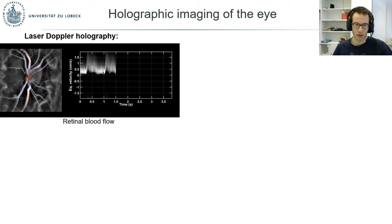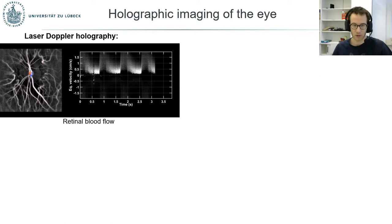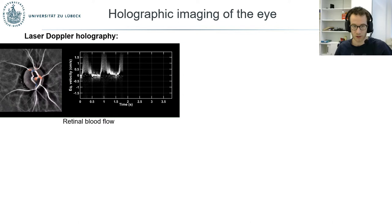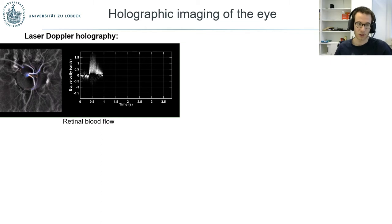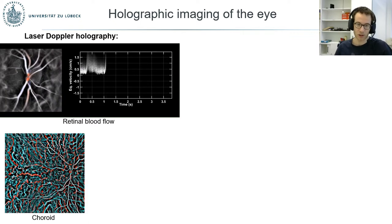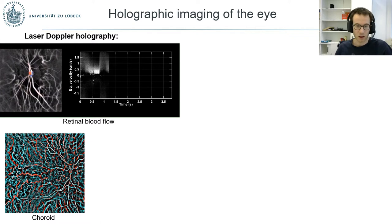Laser Doppler holography is a blood flow imaging technique that relies on digital holography and has been recently implemented for retinal blood flow imaging. The holographic detection allows high temporal resolution, imaging of a wide range of flow velocities, the possibility to numerically compensate for aberration, and the possibility to image the actual direction of flow in red and blue. It has also proven efficient to image choroidal vasculature non-invasively, where functional contrast based on velocity is very helpful for distinguishing arteries and veins.